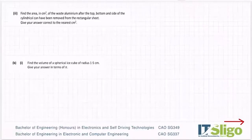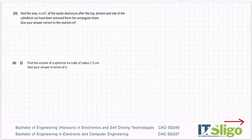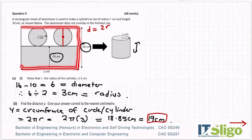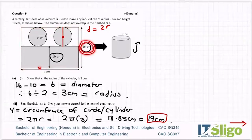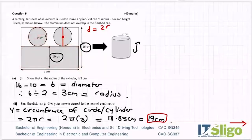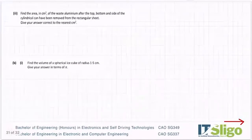Find the area in centimeters of the waste aluminium after the top, the bottom and the side of the cylindrical can have been removed from the rectangular sheet. Give your answer correct to the nearest centimeter. So what is this waste here? How you do that is you get the area of the entire sheet length by breadth. So it's 16 by 19.